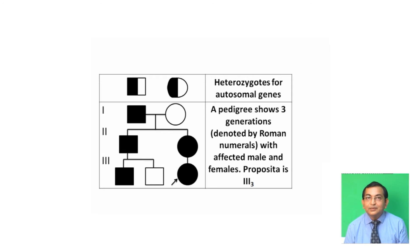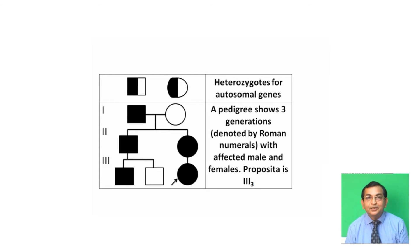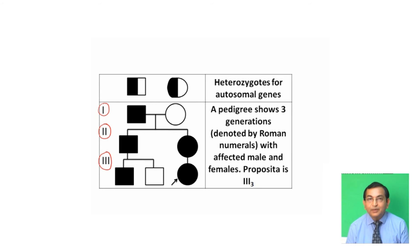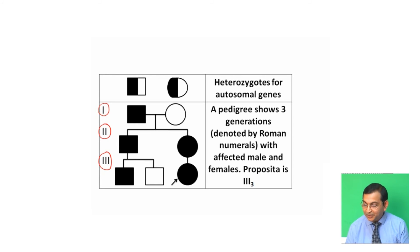There is an example of a pedigree where generations are denoted by Roman numerals — first generation, second generation, and third generation — while individual members within each generation are denoted by Arabic numerals, such as one, two, three.